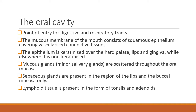The oral cavity is the point of entry for the digestive and respiratory tract. The mucous membrane of the mouth consists of squamous epithelium covering vascularized connective tissue. The epithelium is keratinized over the hard palate, lips, and gingiva, while elsewhere it is non-keratinized. Mucous glands, that is minor salivary glands, are scattered throughout the oral mucosa. CBCS glands are present in the lips and buccal mucosa, and lymphoid tissue is present in the form of tonsils and adenoids. Tumors can arise from any of these components.